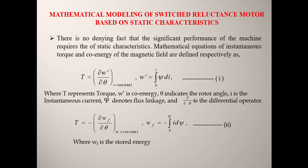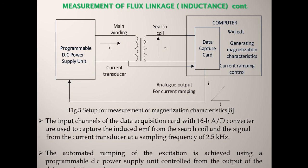For mathematical modeling of the SR motor based on static characteristics: T = dW'/dθ, where W' is the co-energy and θ indicates the rotor angle; i is the instantaneous current and ψ denotes the flux linkage. The torque can also be expressed as T = −dW_f/dθ, where ψ flux linkage is taken as constant and W_f is the stored energy. The stored energy W_f = ∫₀^ψ i dψ.